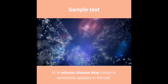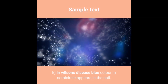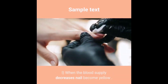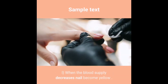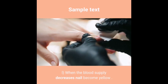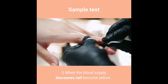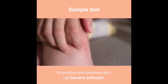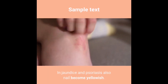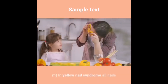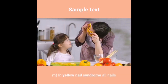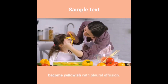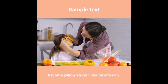K) In Wilson's disease, a blue color in a semicircle appears in the nail. L) When the blood supply decreases, nails become yellow. In jaundice and psoriasis, nails also become yellowish. M) In yellow nail syndrome, all nails become yellowish with pleural effusion.